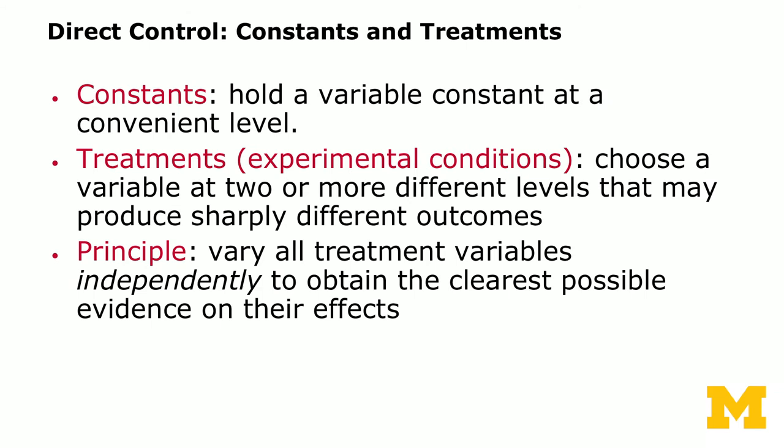The experimenter has direct control in the design process by choosing constants and treatments. Constants are variables that you hold at a convenient level that remains constant throughout different experimental conditions. Treatments or experimental conditions are variables set at two or more different levels, which might produce sharply different outcomes. An important principle in experimental design is that you want to vary all treatment variables independently to obtain the cleanest possible evidence on their effects — and factorial design is one of the methods for doing that.